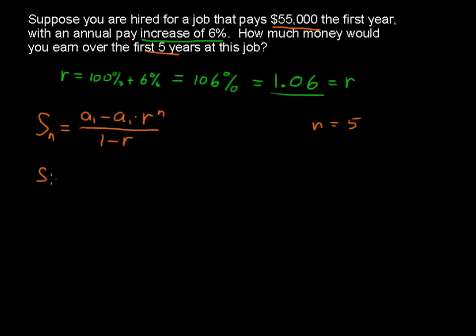Now, S sub 5, that is the sum of the first five terms, equals 55,000 minus 55,000 multiplied by 1.06 to the fifth power. We're going to do exponents before the multiplication. So this is all divided by 1 minus 1.06.